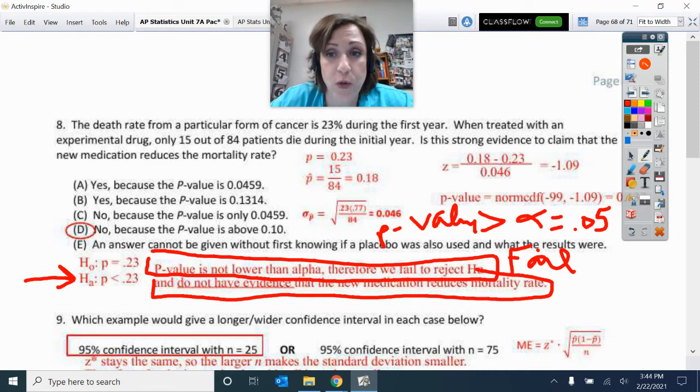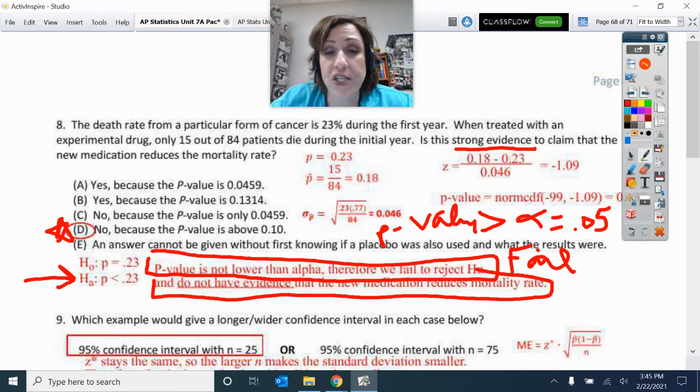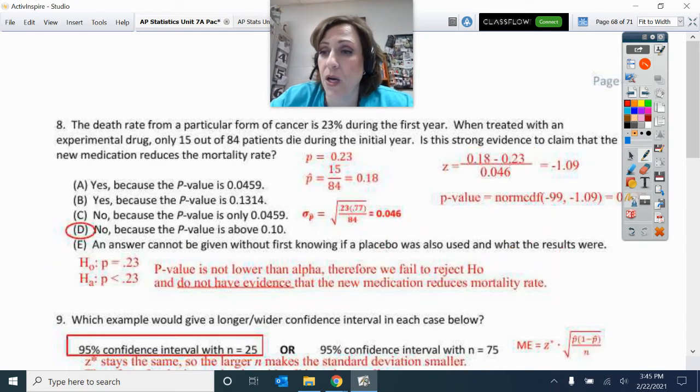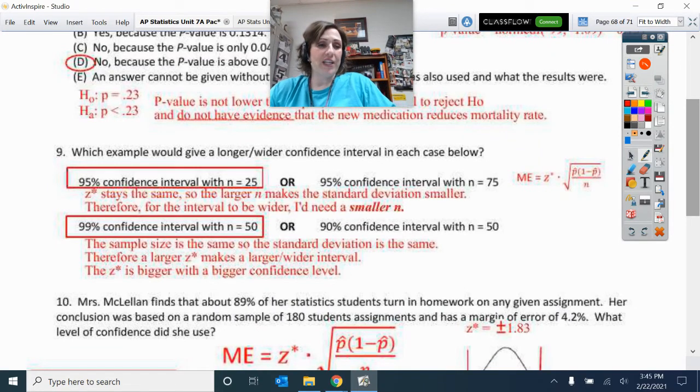So, therefore, is this strong evidence? And that answer is no, because the P value is greater than 0.10. I mean, it could have said greater than 0.05, whichever. All right, moving on. So here, which one makes wider?